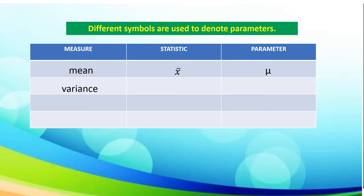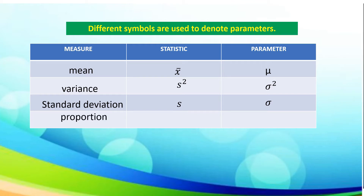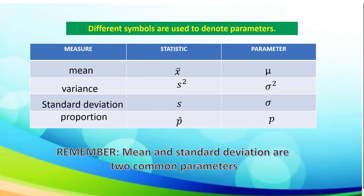For variance, the statistic symbol is s-squared and the parameter symbol is sigma-squared. For standard deviation, the statistic is s and the parameter is sigma. And for proportion, the statistic is p-hat and the parameter is small letter p.